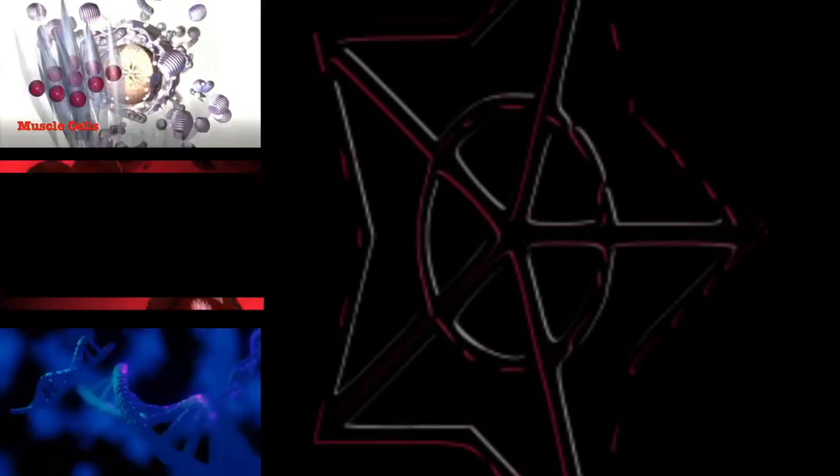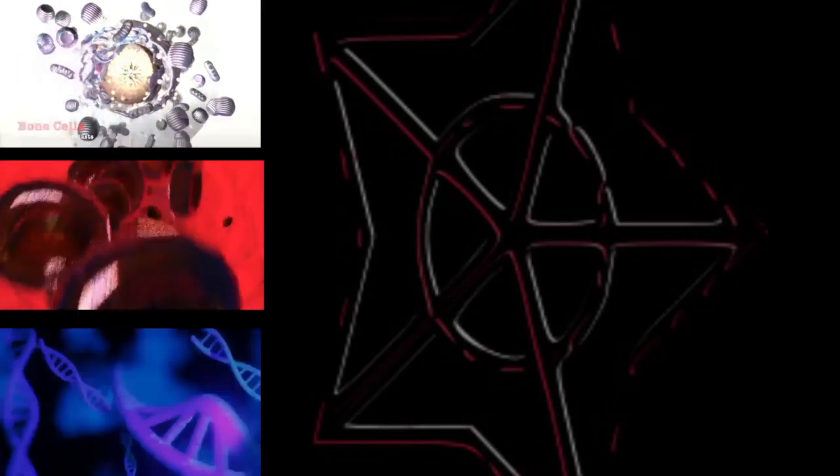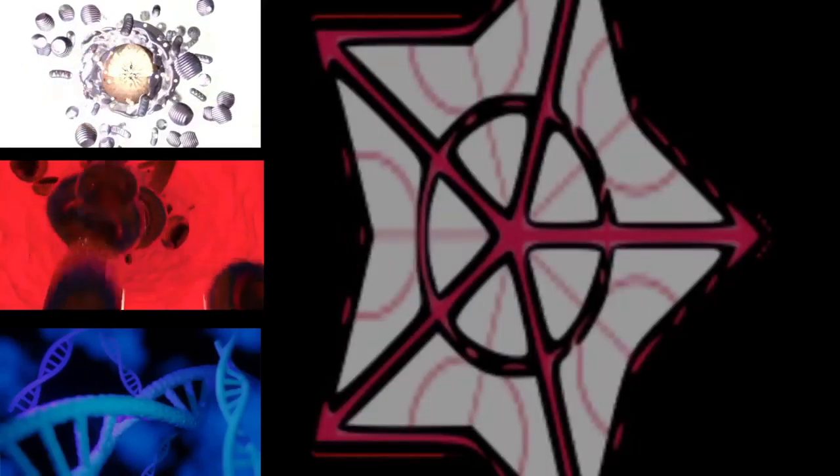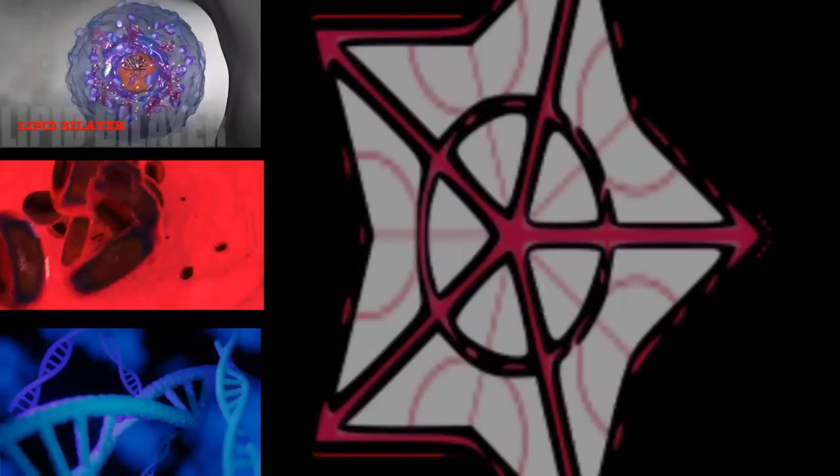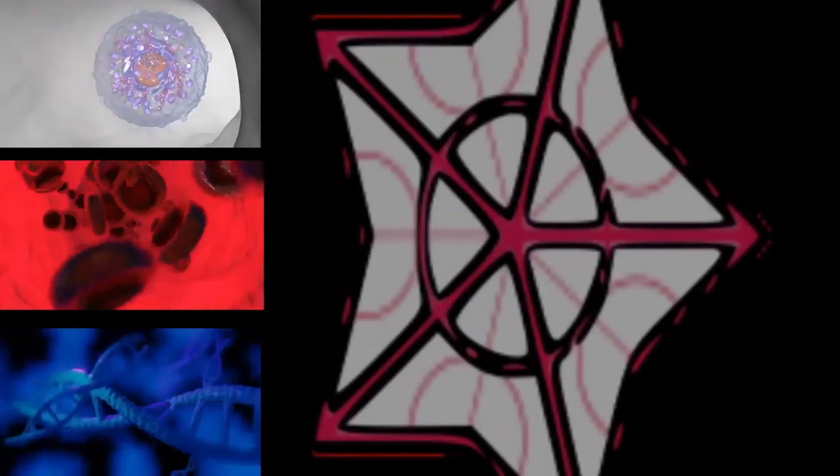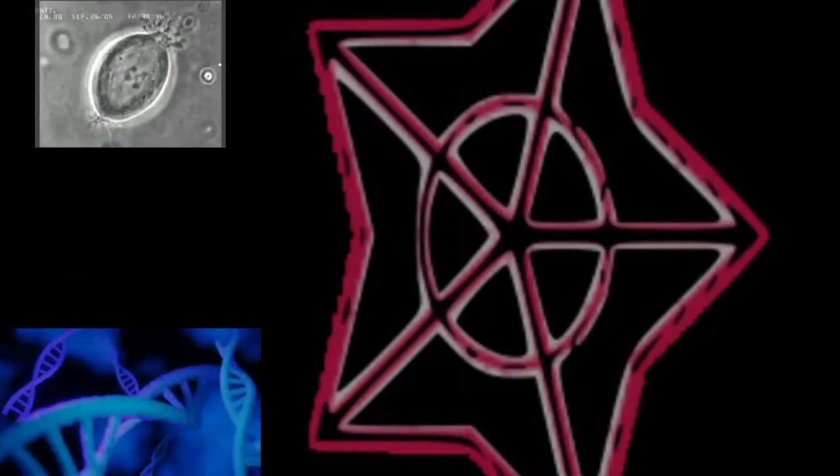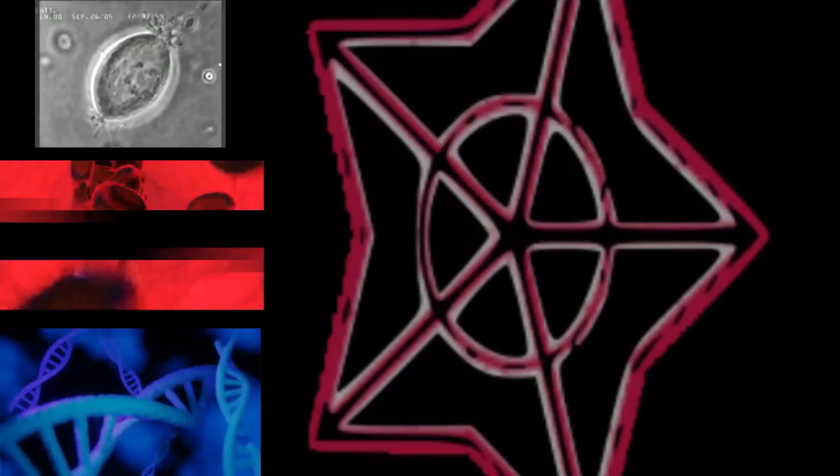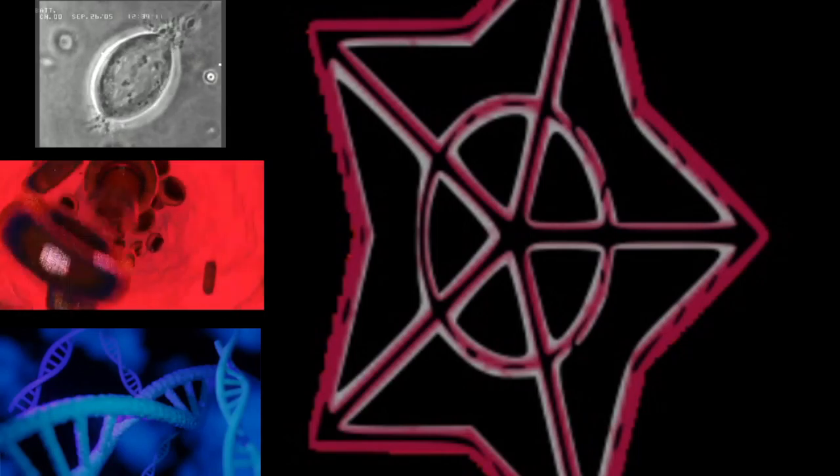As mitosis is less complex than meiosis, meiosis may have arisen after mitosis. However, sexual reproduction involving meiosis is also a primitive characteristic of eukaryotes. Thus meiosis and mitosis may both have evolved in parallel from ancestral prokaryotic processes.